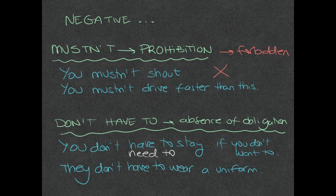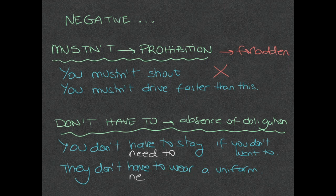However, if you use 'don't have to', you mean there is an absence of obligation — there is no obligation. It can be a synonym of 'don't need to'. So if you say 'you don't have to stay if you don't want to', you're saying there's no need for you to stay; it's not forbidden, it's simply that there is no need. Or regarding school children: 'they don't have to wear a uniform' — they don't have the obligation to do that.